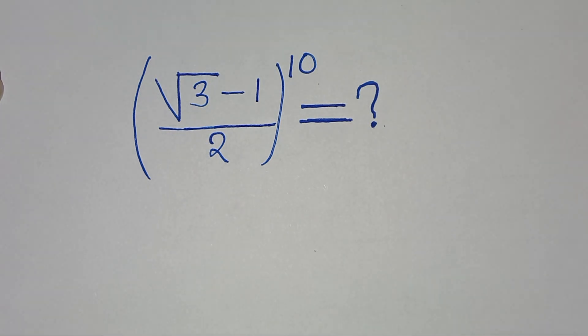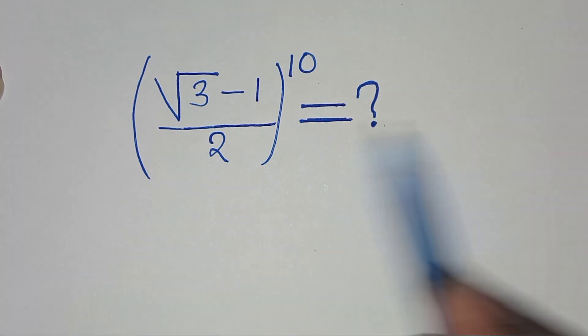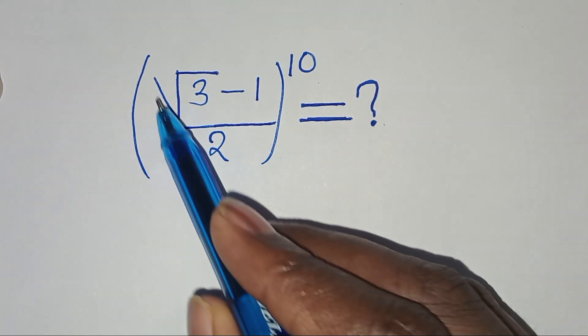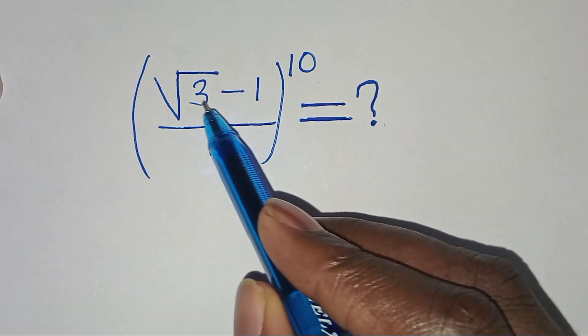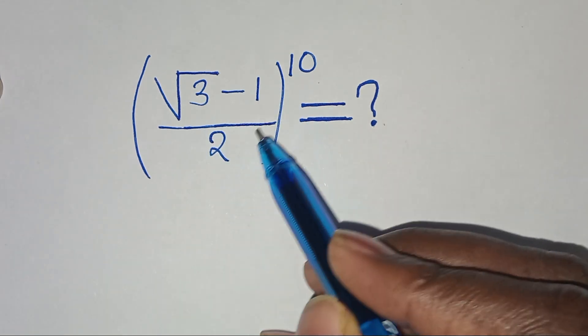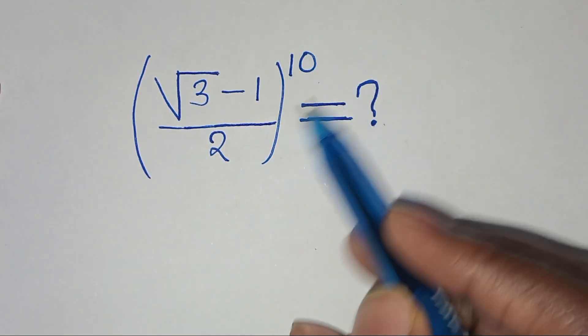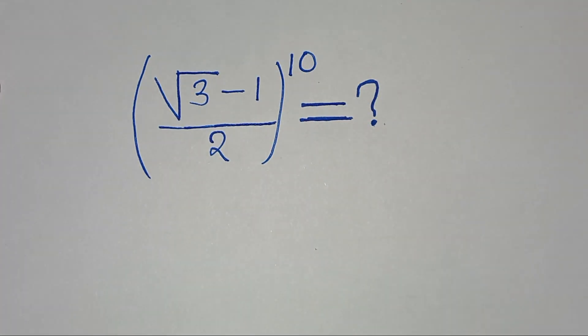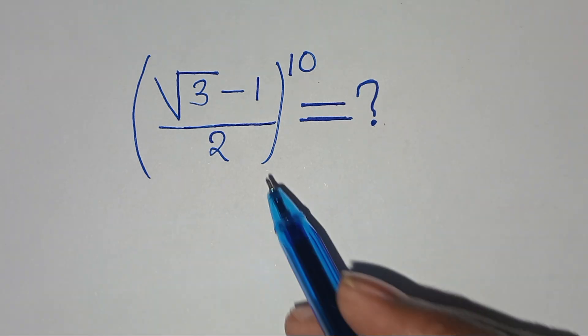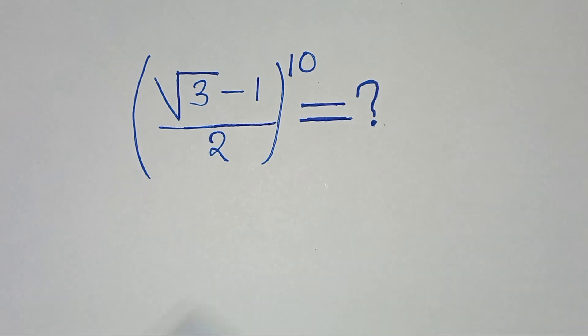Hello everyone, you are welcome to solve this nice math problem, which is the square root of 3 minus 1 over 2, raised to the power of 10. So how do we solve this problem?